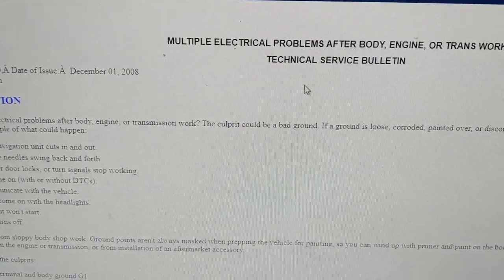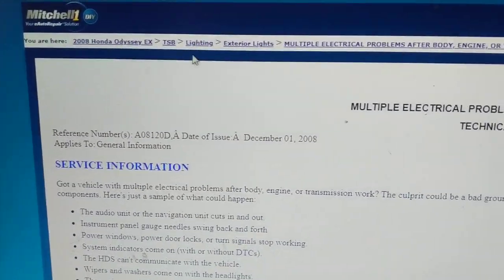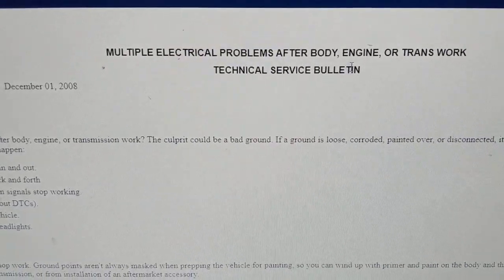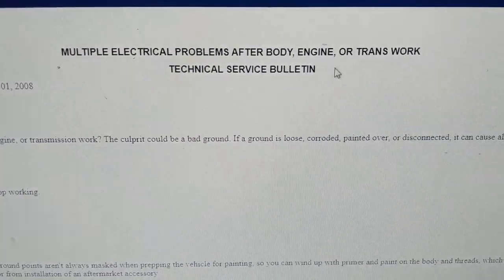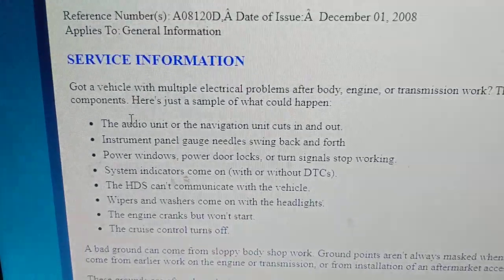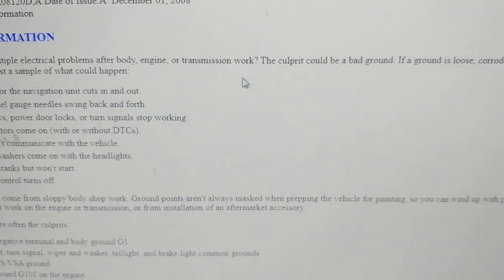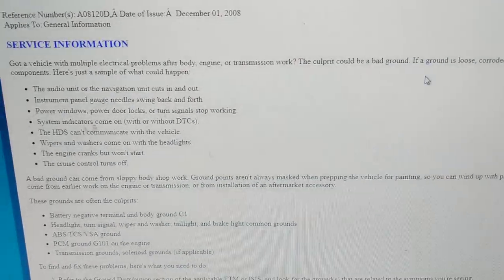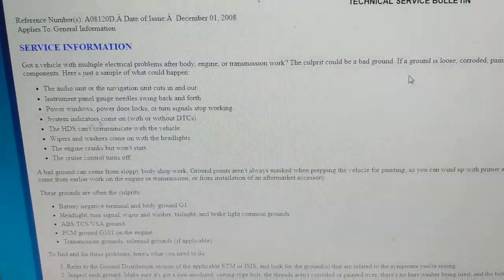We were discussing the category of why we need Mitchell. It tells you service bulletins — technical service bulletins. For example, electrical problems after body, engine, or transmission work. If you have a vehicle with multiple electrical problems after that kind of work, the culprit could be a bad ground, because it's common to everything.